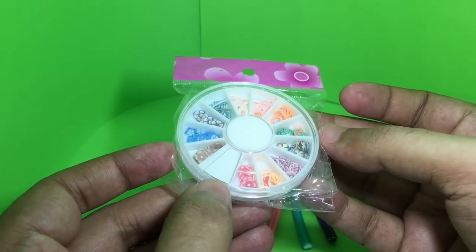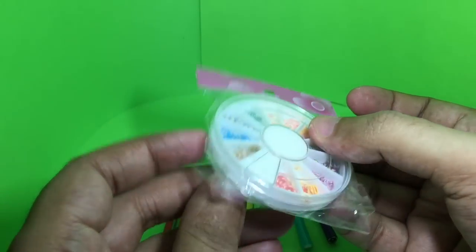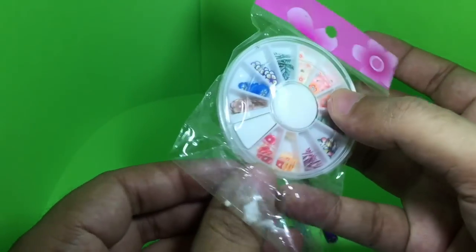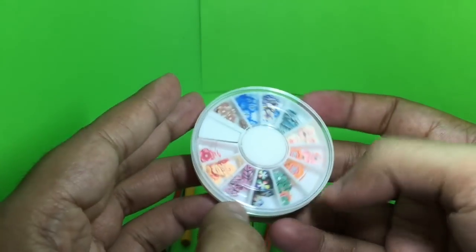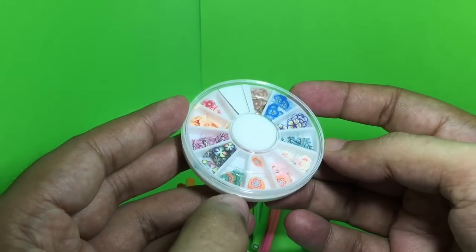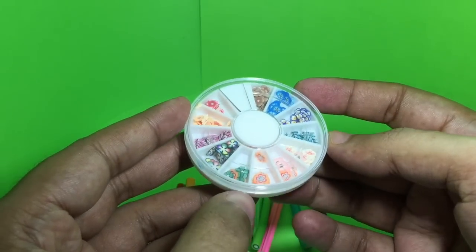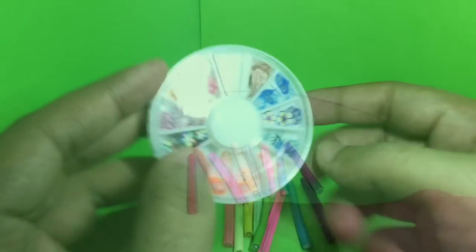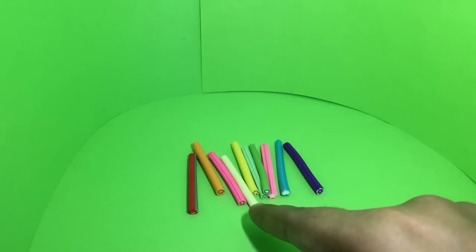You can also buy these pre-cut like this. They come in this nice case. This costs around 30 rupees or around 50 cents. The sticks cost around 120 rupees or around 2 dollars.